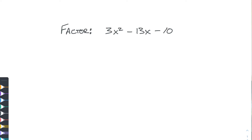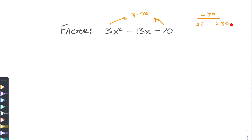We look at three times negative ten, which gives us negative thirty. Now we look at the factors of negative thirty that add up to negative thirteen. We've got plus or minus one and plus or minus thirty — negative one plus thirty is positive twenty-nine, and positive one and negative thirty gives negative twenty-nine, so neither of those works. Next factors: plus or minus two and plus or minus fifteen. A positive two and a negative fifteen gives negative thirteen — there we go.